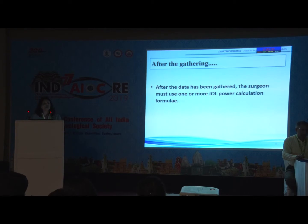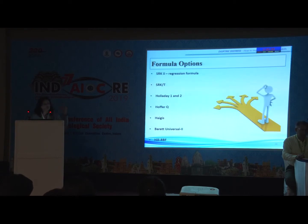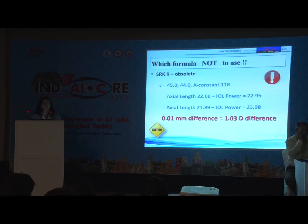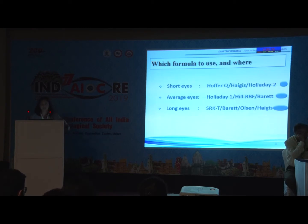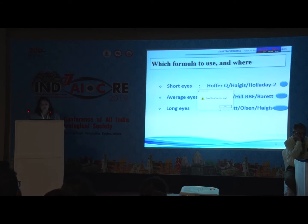Once the data has been gathered, the surgeon must use one of the IOL power calculation formulas. There are multiple formulas. SRKT is obsolete — please don't use it. For short eyes, Hoffer Q, Haigis, and Holladay 2 can all be used. For average eyes, Hill RBF and Barrett and other latest formulas are used. For long eyes, Barrett, Olsen, and Haigis all work.